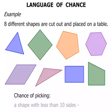What's the chance of picking a shape with less than ten sides? Well, looking at each of those shapes, every single one of them has less than ten sides. So it is certain that the shape you pick will have less than ten sides. It's certain, it will happen.